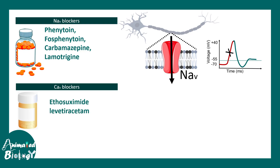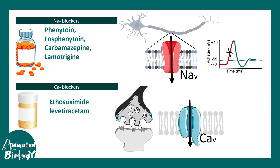Another category is calcium channel blockers, also known as voltage-gated calcium channel blockers, which include ethosuximide and levetiracetam. These drugs block the voltage-gated calcium channel. In the presynaptic terminal, voltage-gated calcium channels are critical for synaptic neurotransmitter release, which evokes postsynaptic activity in the next neuron. If the calcium channel is blocked, that activity is tamed down — this is how calcium channel blockers work.